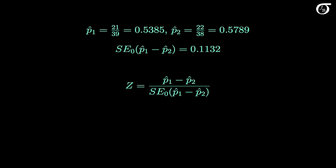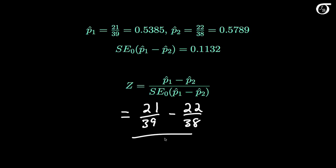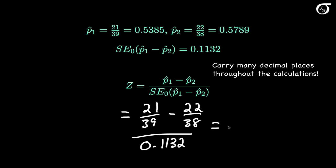Now that we've got the standard error, the calculations are pretty simple. The z statistic is the difference in the sample proportions divided by the standard error: p1 hat, which is 21 out of 39, minus p2 hat, which is 22 out of 38, divided by the standard error of 0.1132. To 3 decimal places this works out to minus 0.358.